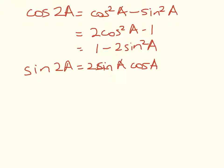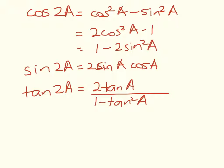Now that's a really easy one to remember. Okay, and the last one is that tan of 2A is equal to 2 tan of A over 1 minus tan squared of A.